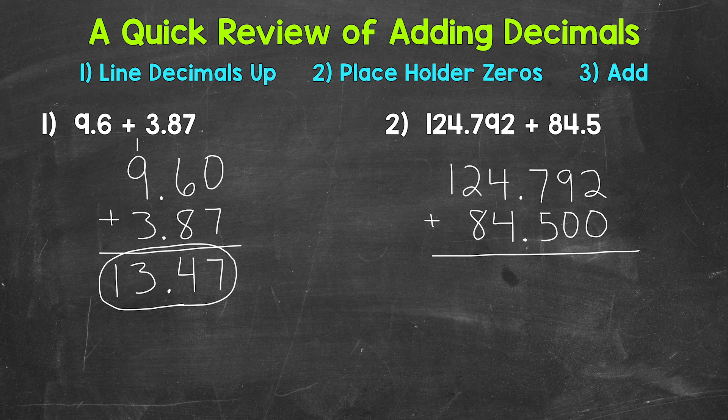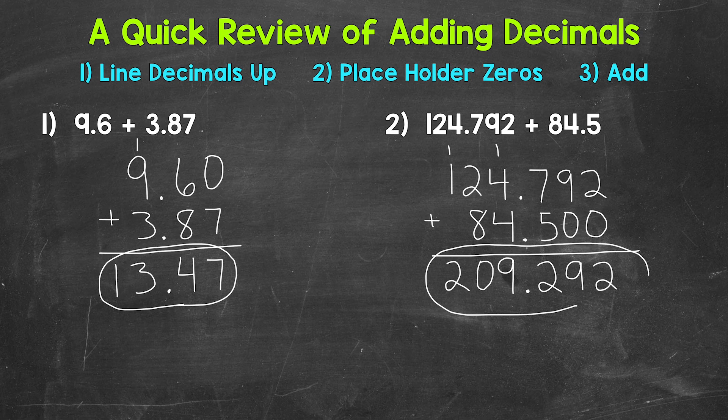So we'll start with the thousandths place: 2 plus 0 is 2. The hundredths place: 9 plus 0 is 9. The tenths place: 7 plus 5 is 12, so we'll put our 2 and then carry the 1. We can bring our decimal straight down into the answer. Now we have the ones place: 1 plus 4 is 5, plus 4 is 9. The tens place: 2 plus 8 is 10, so we'll put our zero here, carry the 1. And then the hundreds place: 1 plus 1 is 2. So we end up with 209 and 292 thousandths.